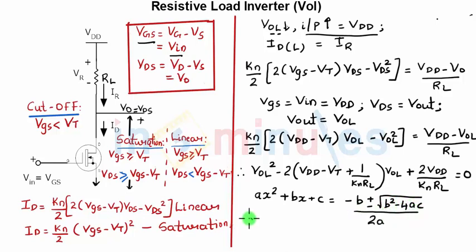We know here in this case A is equal to 1, C is equal to 2VDD by KN RL as a constant, and B is nothing but minus (2(VDD minus VT) plus 1 by KN RL).